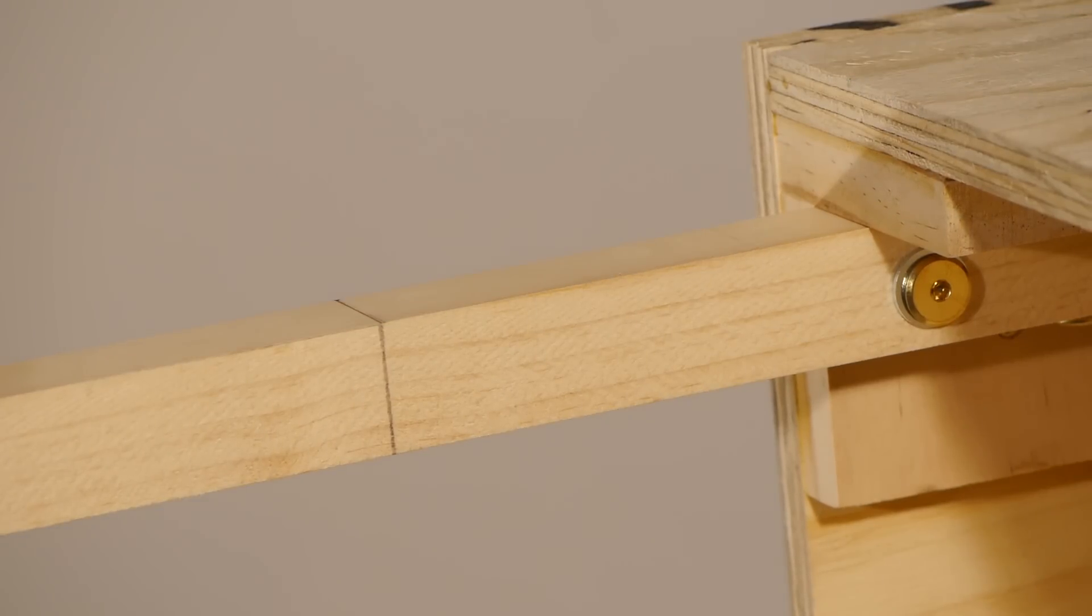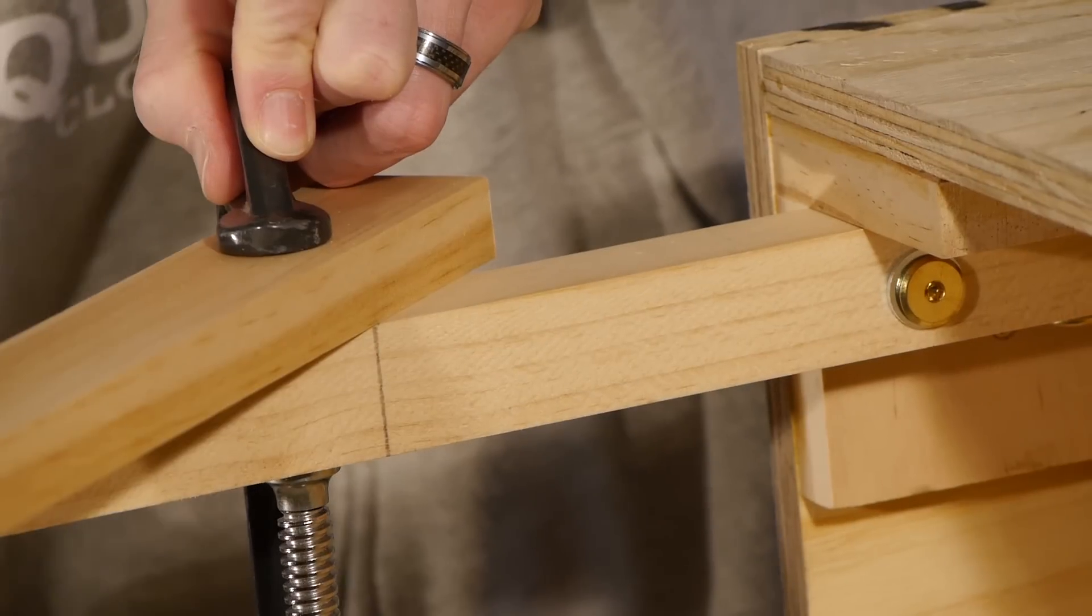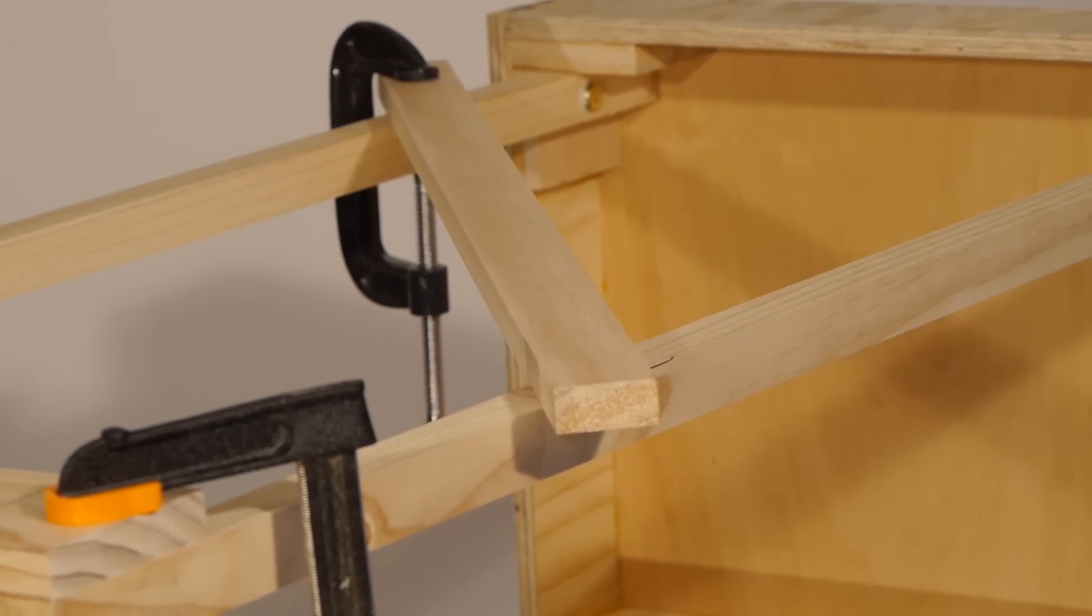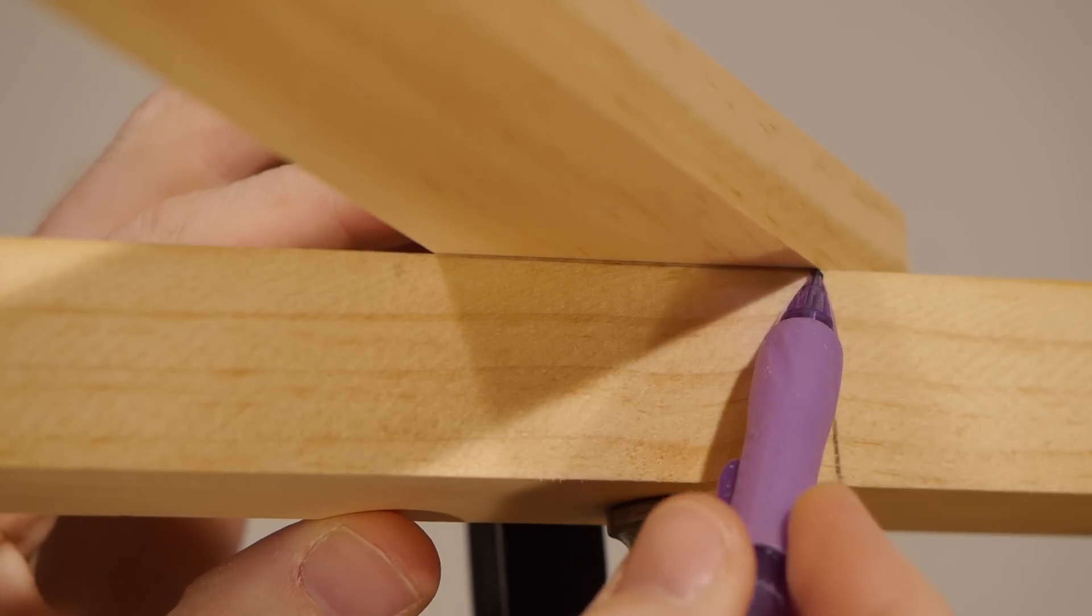As it stands the module is very unstable. I will install cross bracing to help keep the module stable. There's no specific size to this, just measure and cut the brace and screw it into position.